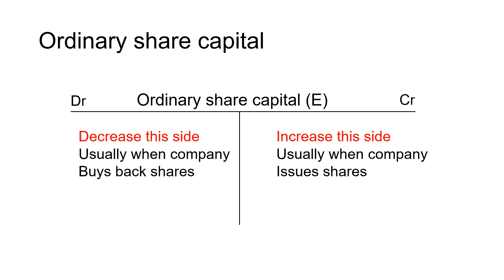Ordinary share capital is an equity account representing the owner's wealth in the business. When shareholders buy shares, their equity increases on the credit side. When the company buys back shares from shareholders, their equity decreases on the debit side. This is just a high-level introduction to company ledger accounts, but in the next lessons we go deeper by doing examples, some from past papers.